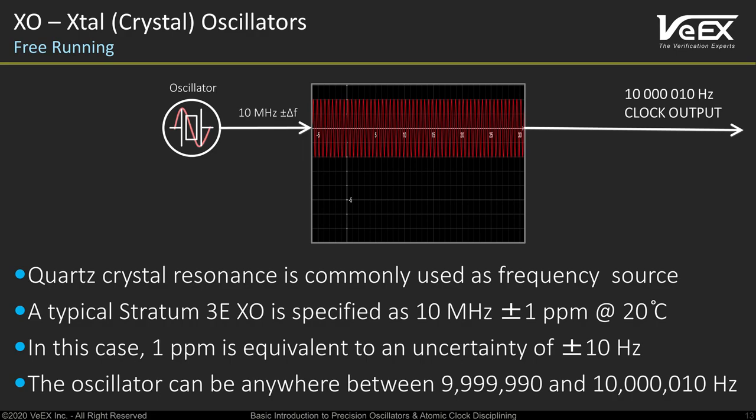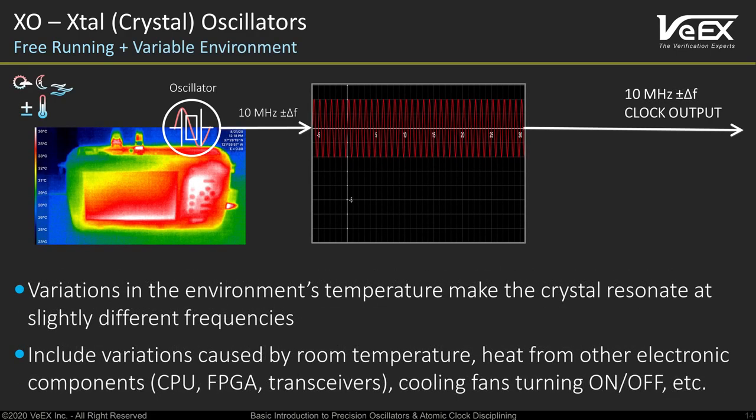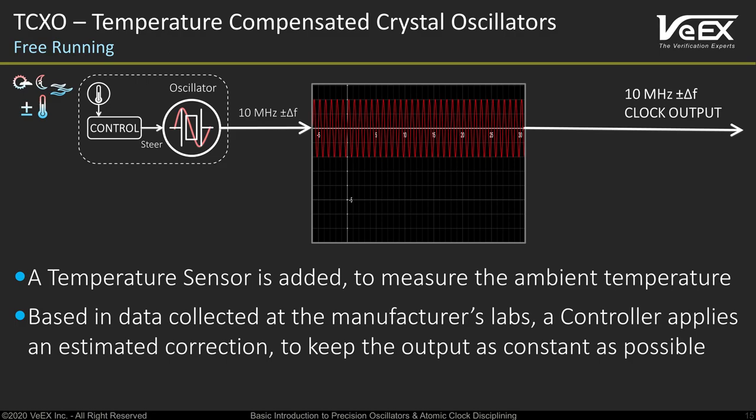One of the problems with quartz oscillators is that their frequency varies with changes in ambient temperature — not just weather or room temperature, but the heat generated by electronics and fluctuations created by cooling fans. If a temperature sensor is added, the manufacturer can design a controller that applies estimated corrections based on empirical data, making it a more predictable and stable temperature compensated crystal oscillator, or TCXO.